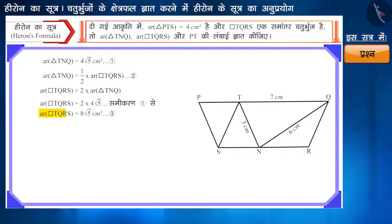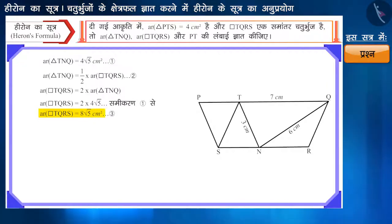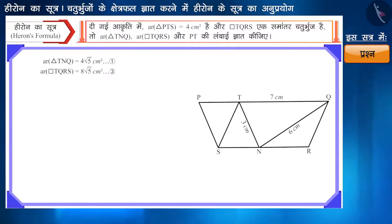इसलिए समानांतर चतुर्भुज TQRS का क्षेत्रफल 8√5 वर्ग सेंटीमीटर प्राप्त होगा।